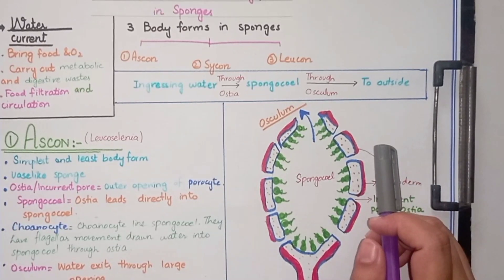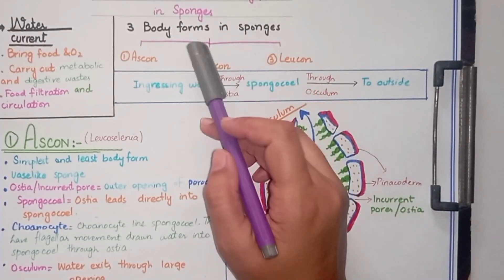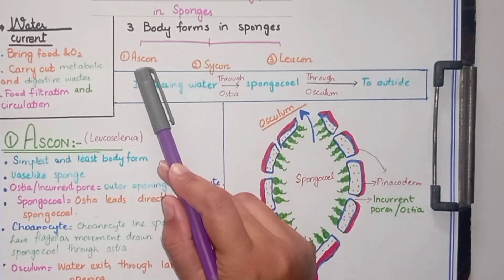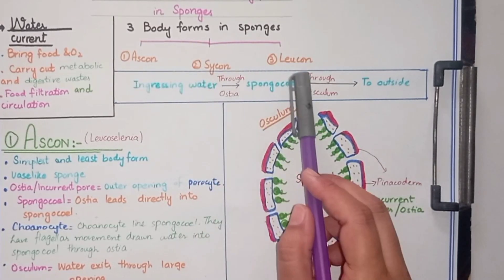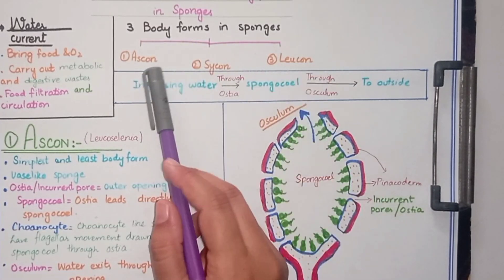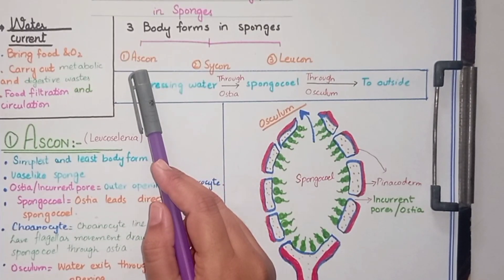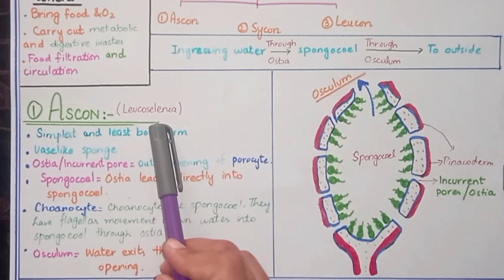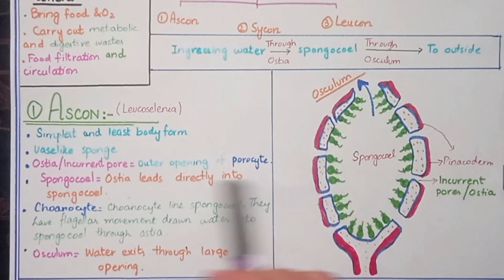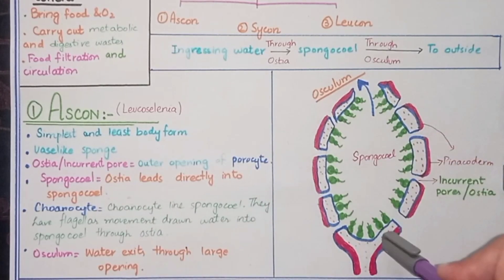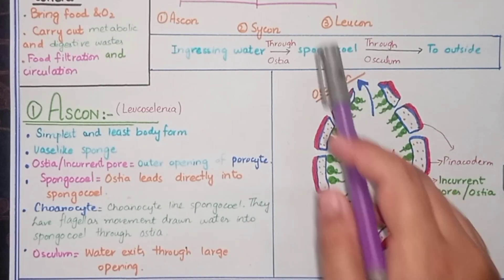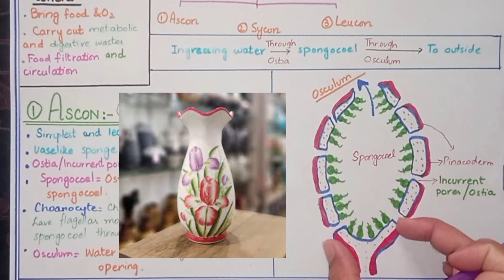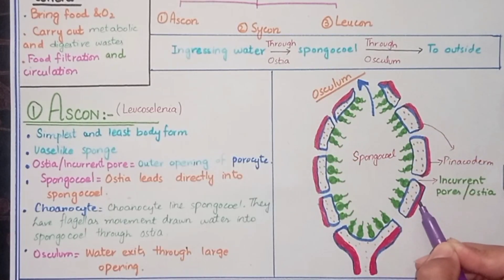Water current mechanism is very important for sponges, so sponges have adopted different types of body forms to circulate water. There are three types of body forms in sponges: Ascon, Sycon, and Leucon. First, we are going to talk about the Ascon body form, which is present in Leucosolenia. It has a very simple structure and this body form is very few in number among sponges.